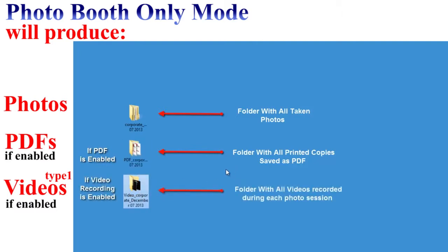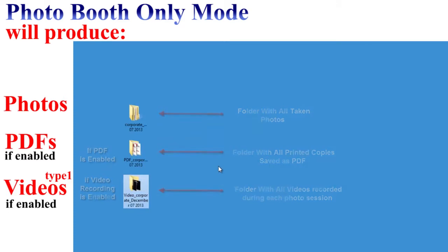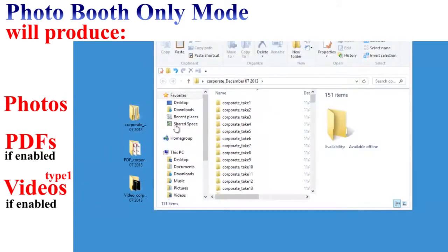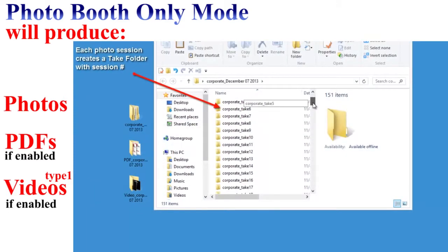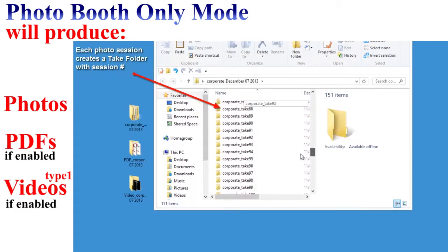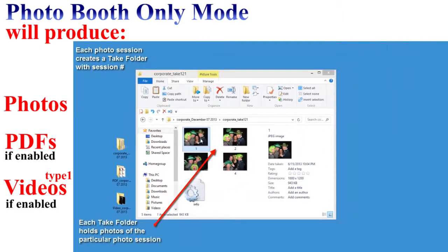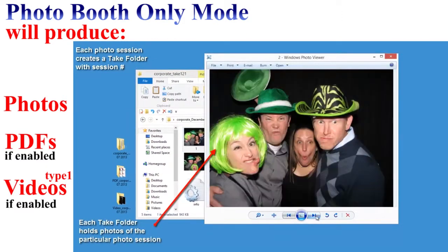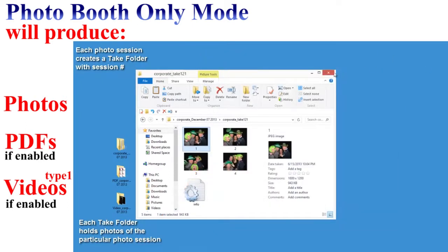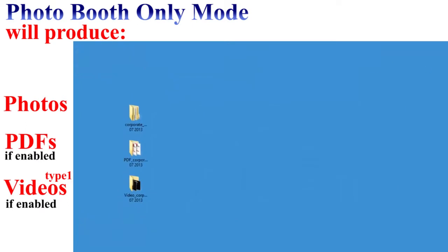Once again, the video folder is created as long as you've enabled that option. The first folder is where all of our pictures are. Inside this folder you will see individual folders with take numbers.